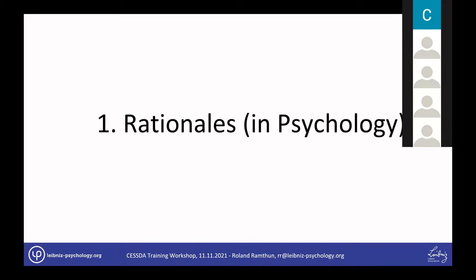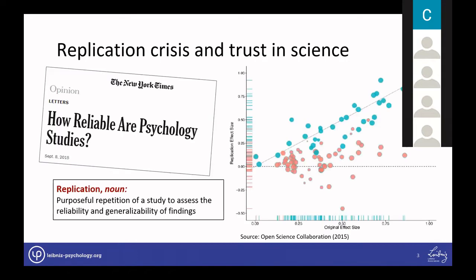Why do we need open science practices in psychology? A strong motivation has been the replication crisis. A replication is the repetition of a previous study with a specific purpose—to support or disconfirm previous findings with a new sample. In recent years, findings in various disciplines including psychology have failed to be replicated. The Open Science Collaboration conducted a replication of 100 studies published in three important psychology journals, and only 39 could be replicated successfully.